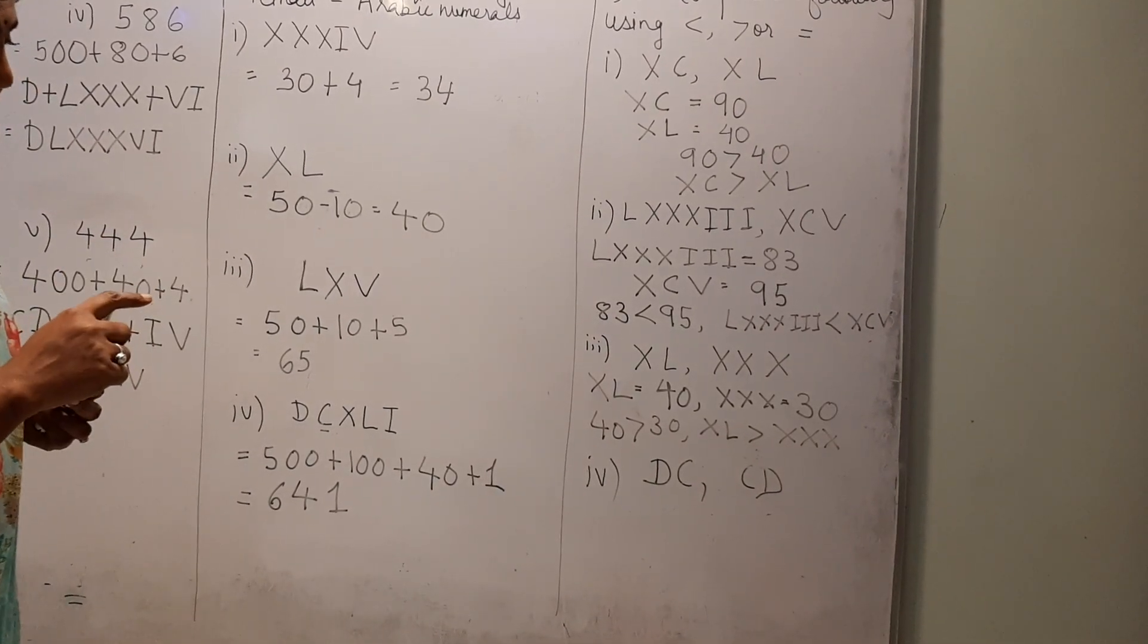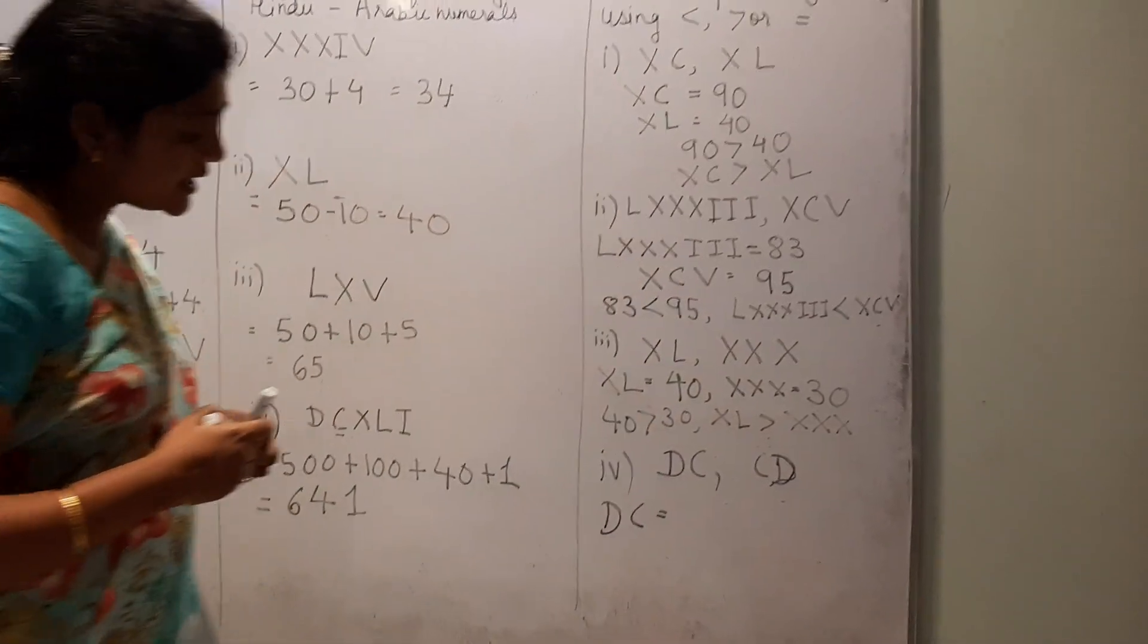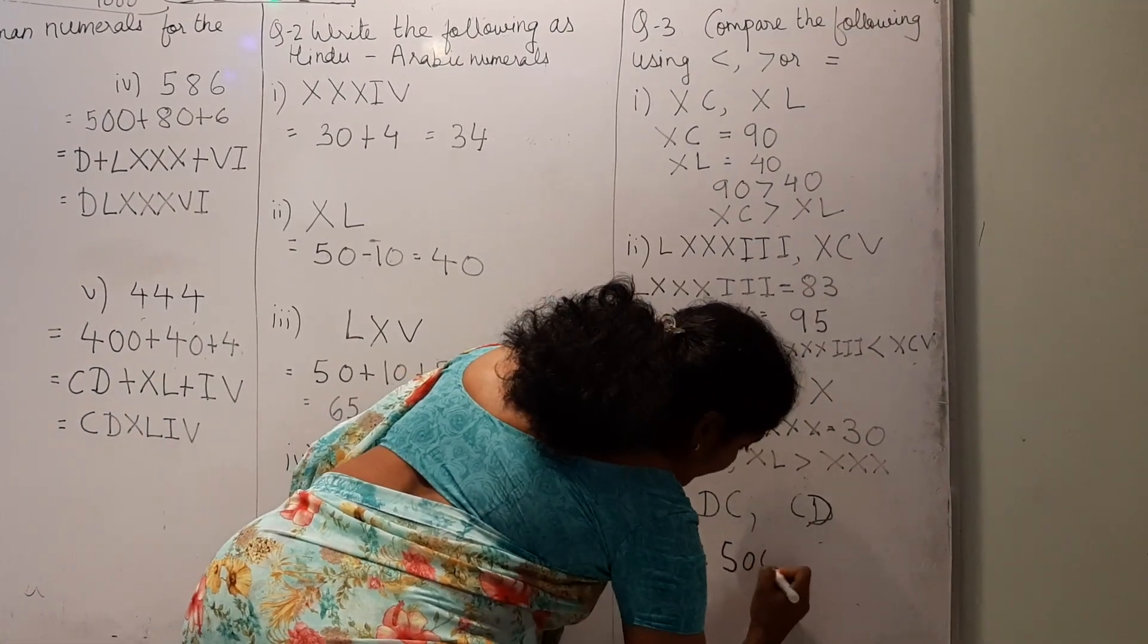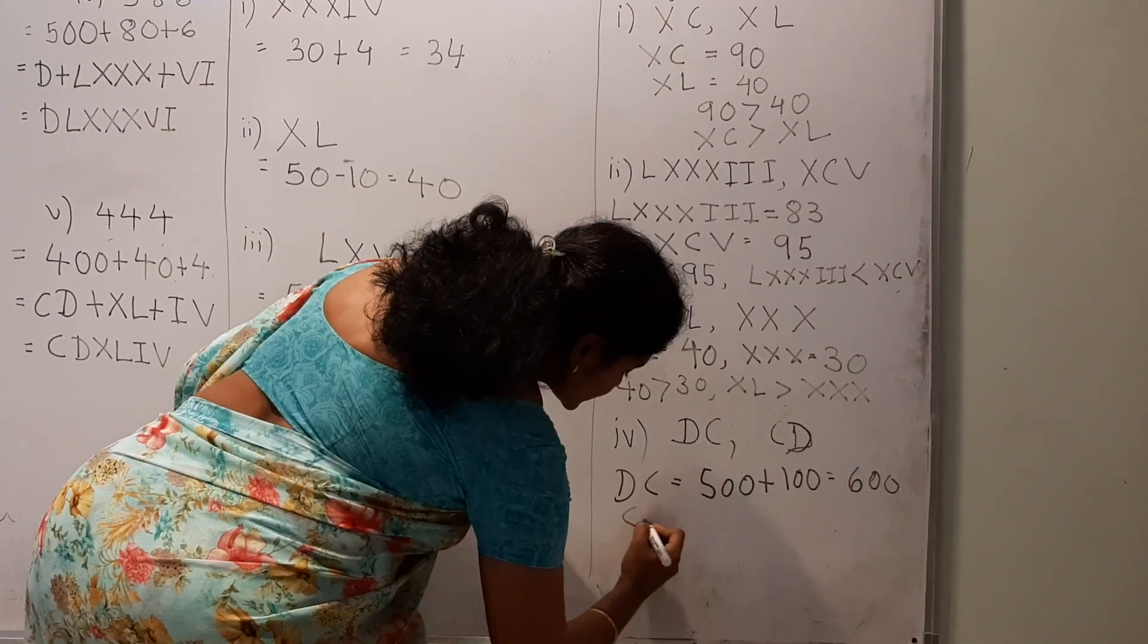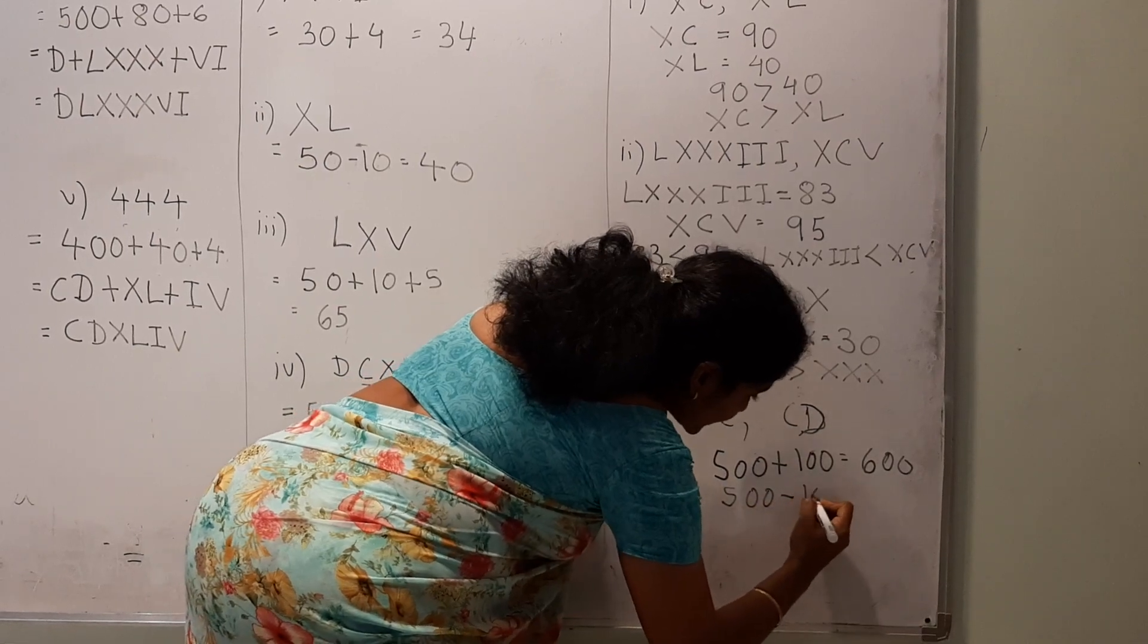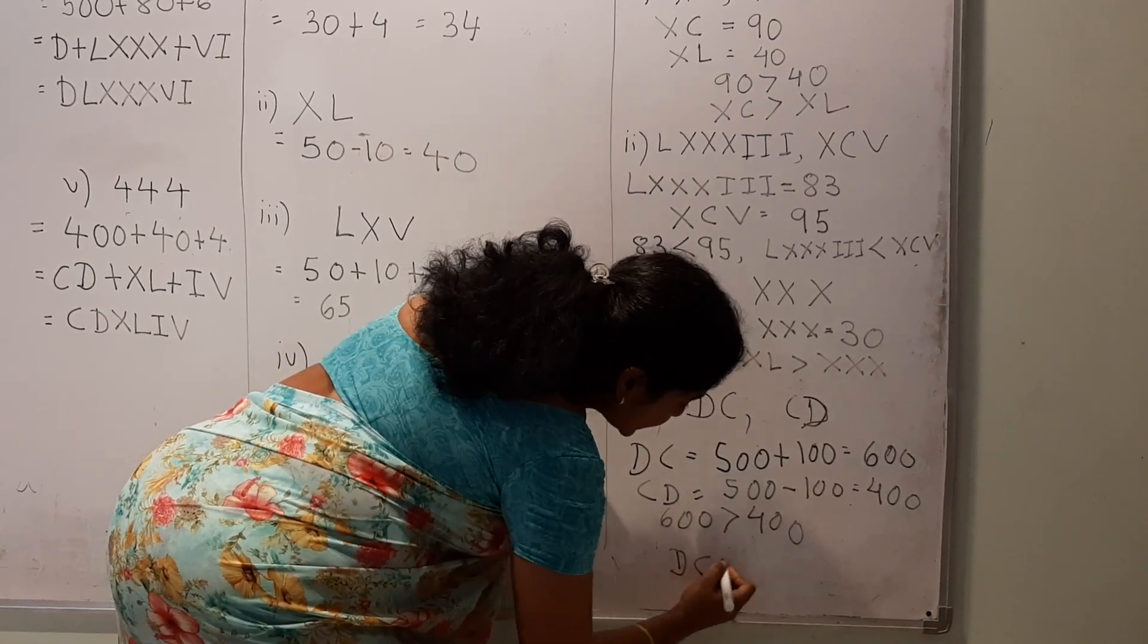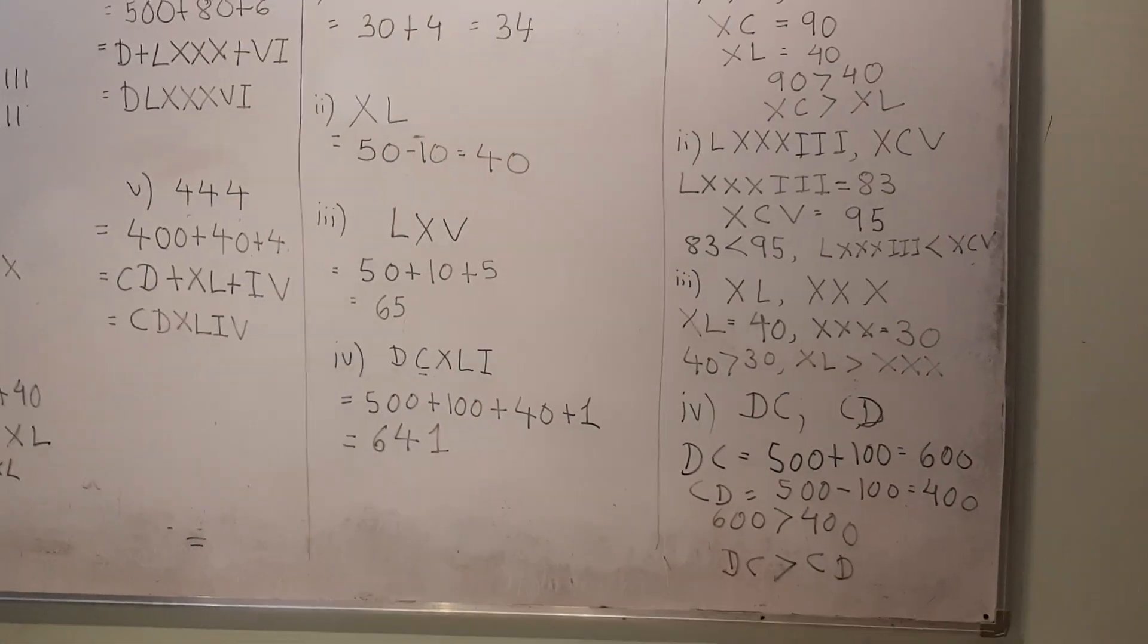This is another one. DC and CD. Now, DC. D is 500, C is 100. This is greater, this is smaller. Written to the right means, you have to add it. So, this will be 500 plus 100, this is 600. Second is CD. C is written to the left. Means, minus. So, 500 minus 100 is 400. So, which is greater here? DC is 600 is greater than 400. That means, DC is greater than CD. You have done this in the earlier class also.